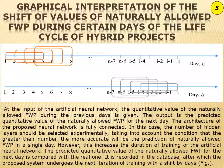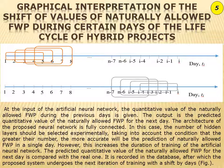The number of hidden layers should be selected experimentally, taking into account the condition that the greater their number, the more accurate would be the prediction of the naturally allowed fund for work performance in a single day. However, this increases the duration of training of the artificial neural network. The predicted volume for the naturally allowed fund for work performance for the next day is compared with the real one.